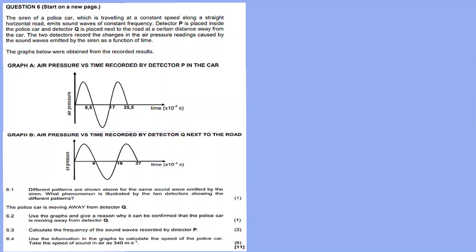This is question 6, dealing with the Doppler effect, from the November 2019 question paper. There are links for other recordings for this question paper in the description box. The question involves the siren of a police car traveling at a constant speed along a straight horizontal road, emitting sound waves of constant frequency. Detector P is placed inside the police car and detector Q is placed next to the road at a certain distance from the car.